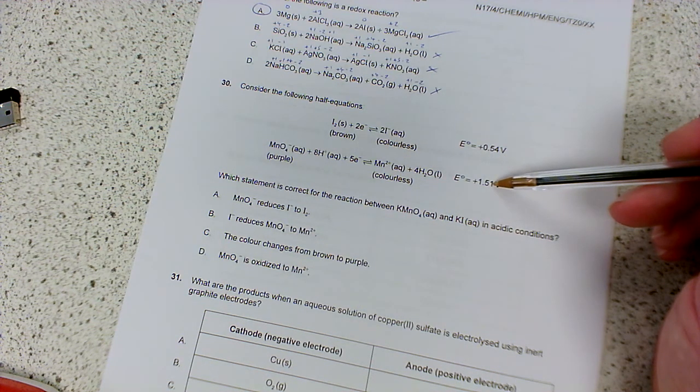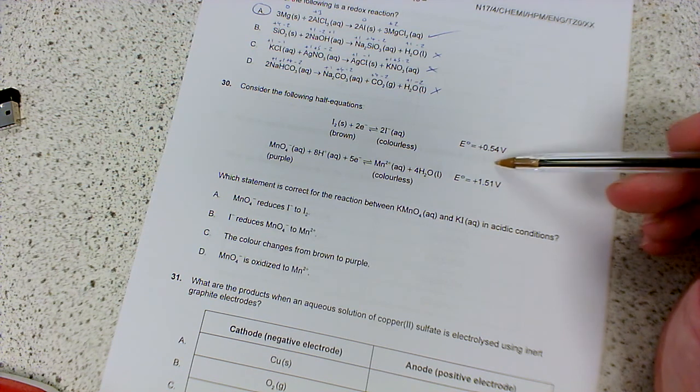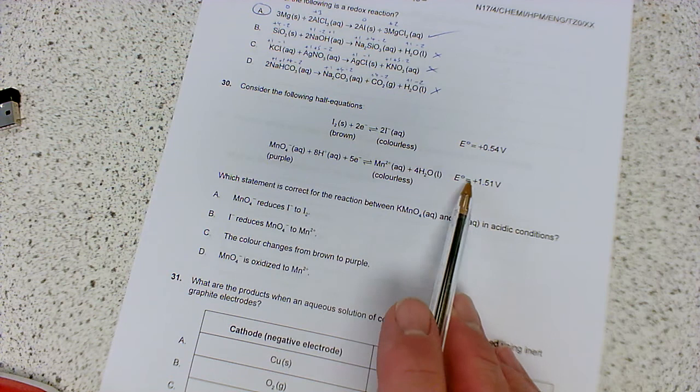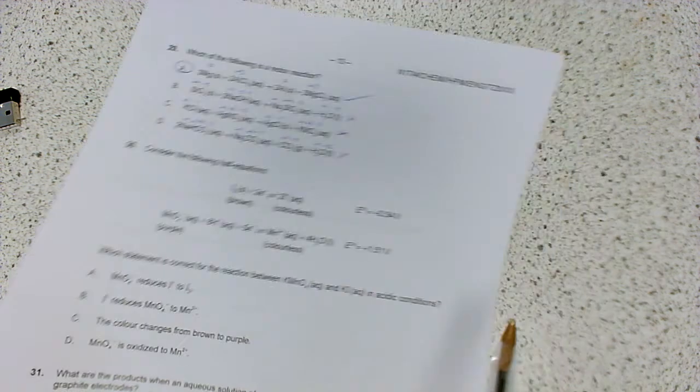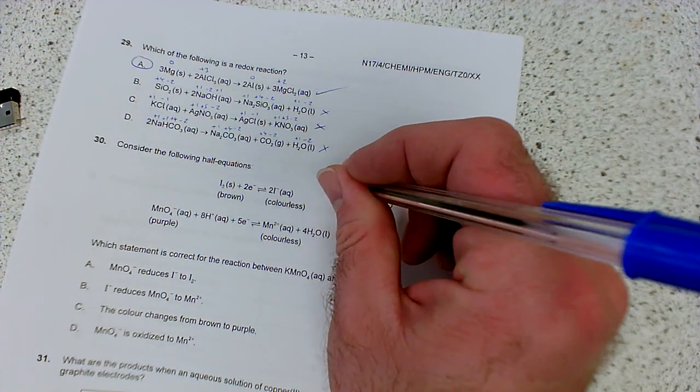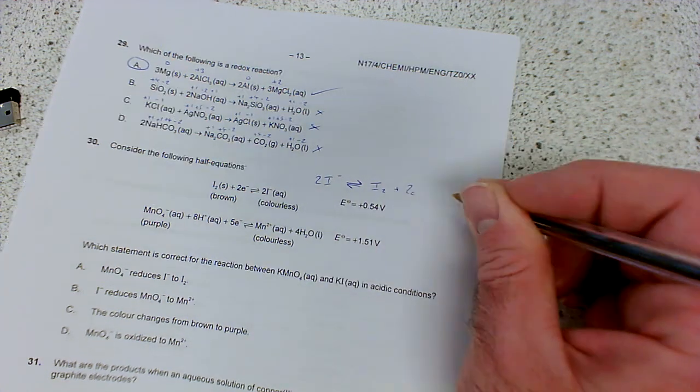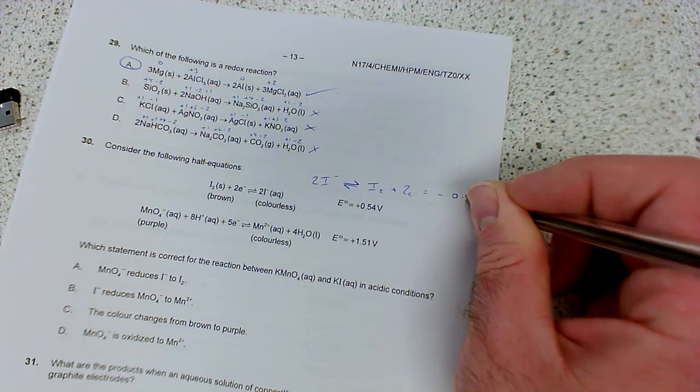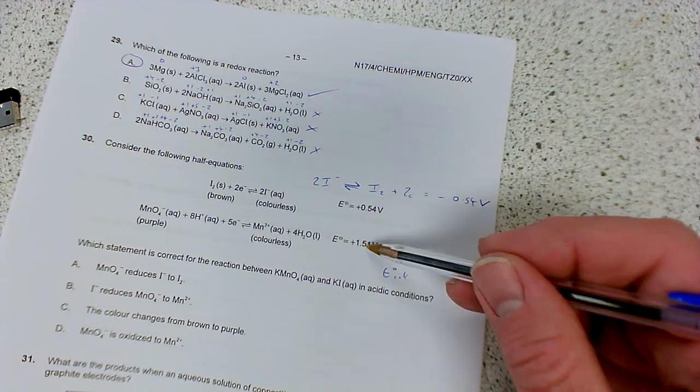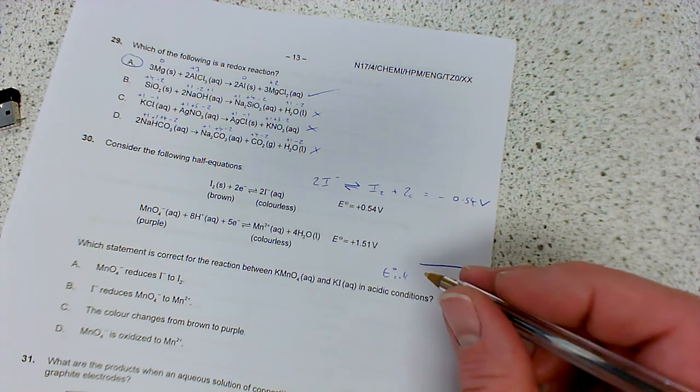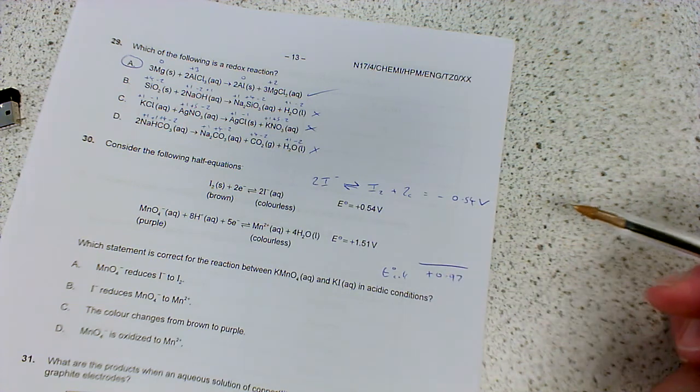If we flip this one, that's going to become minus 1.51, and that's then going to make the overall thing negative, because minus 1.51 plus 0.54 is going to give us a negative number. So remember, the one with the most positive E cell value is your oxidizing agent, basically. So this is going to stay the same, and this is the one that's going to flip. So that would flip, what's going to happen is that I minus is going to form iodine by losing 2 electrons, and then this would then become minus 0.54. So our overall value for the cell would be 1.51 minus 0.54, so it would end up as being plus 0.97. So that would be the overall value, so positive, so that's the way it's going to proceed then.